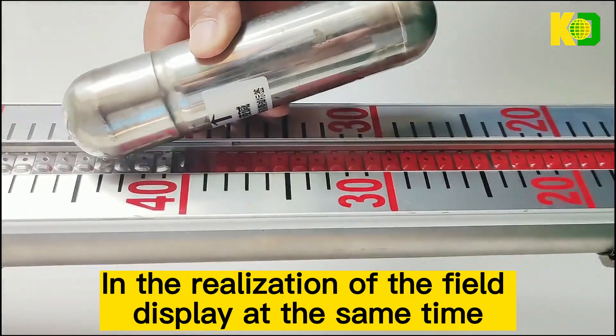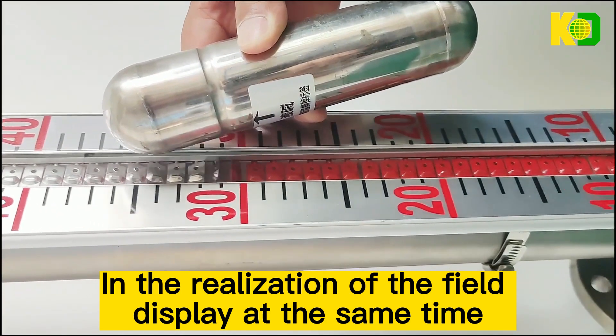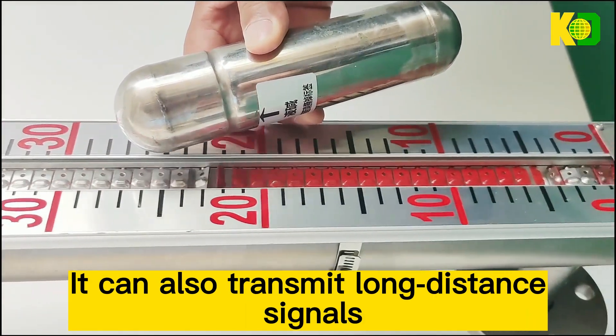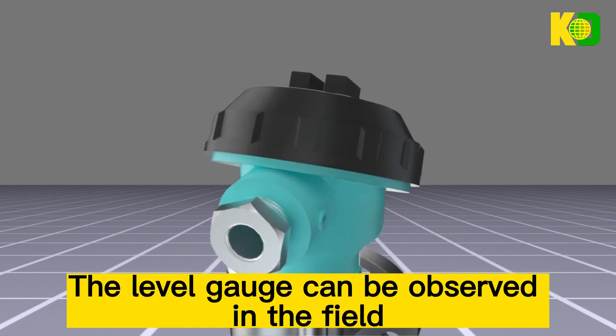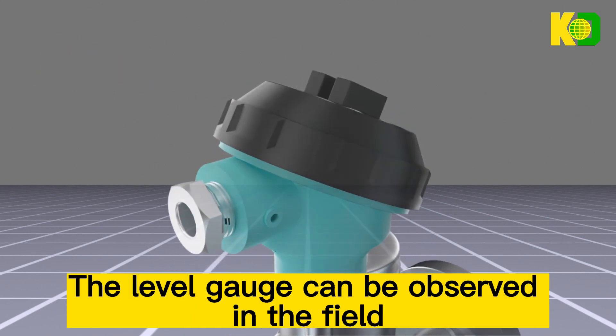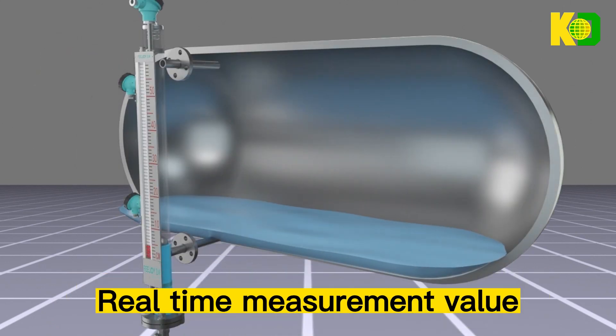In the realization of the field display at the same time, it can also transmit long distance signals. Field personnel can observe the level gate in the field real-time measurement value.